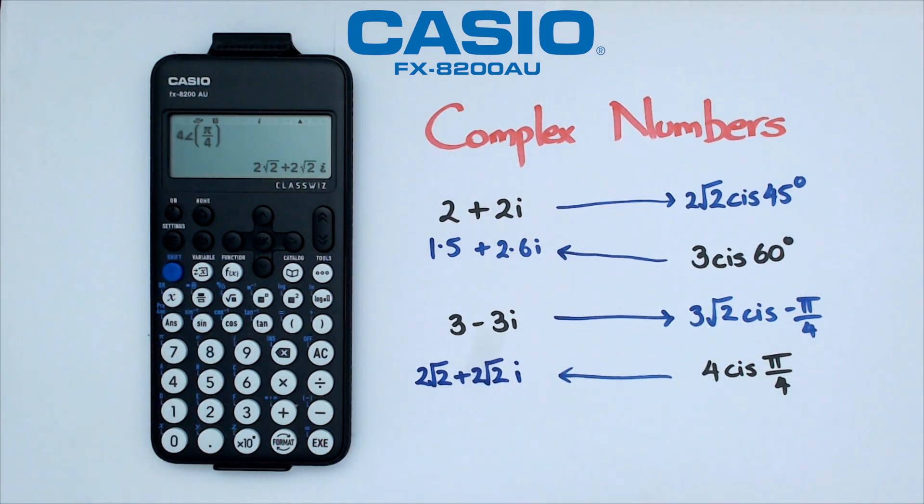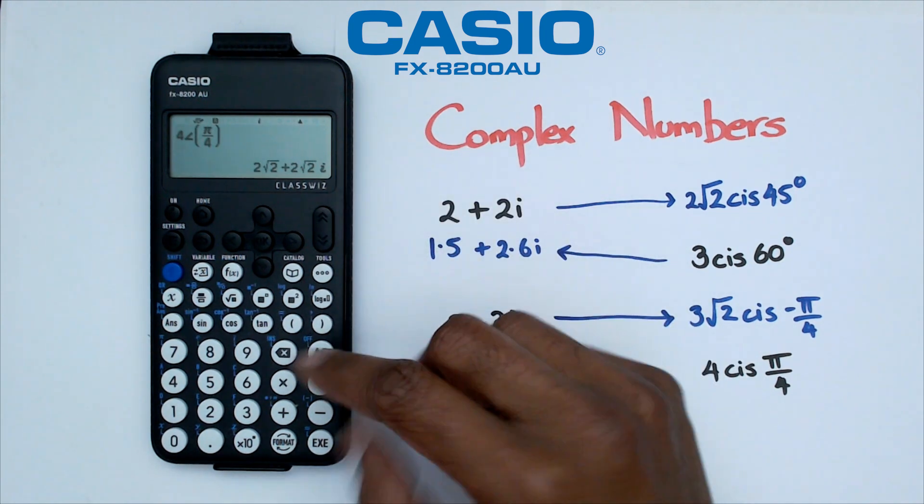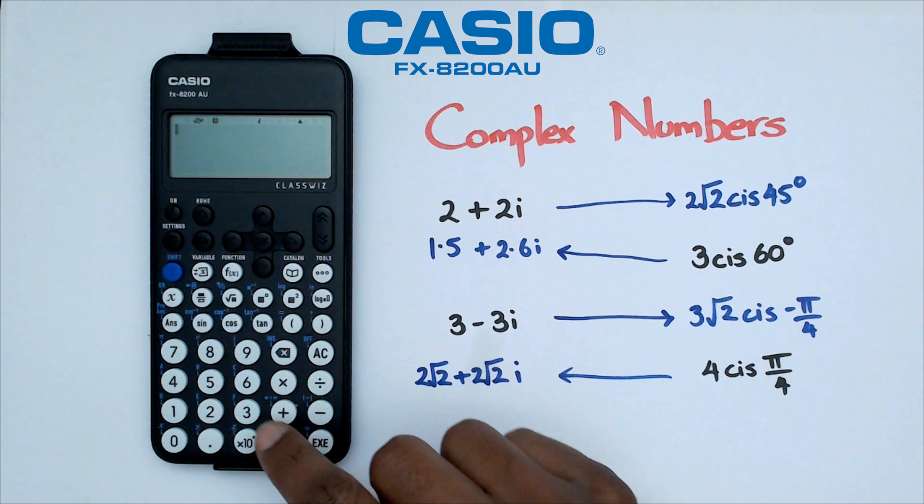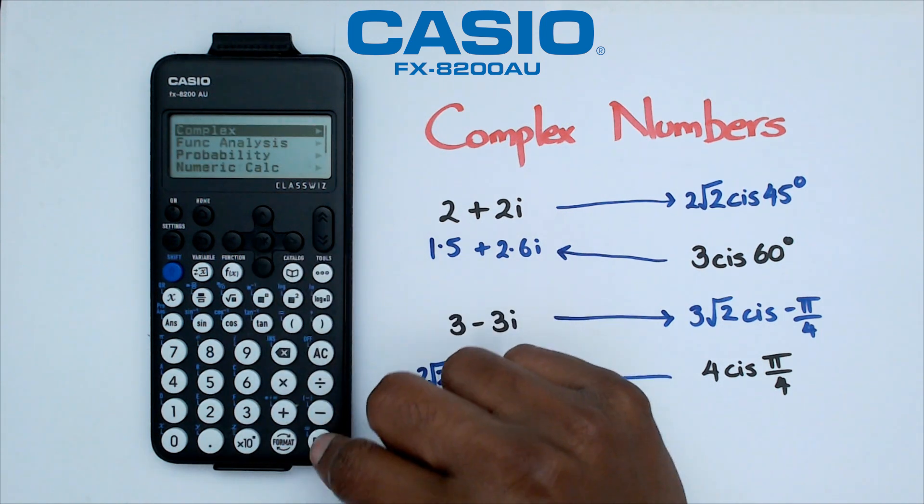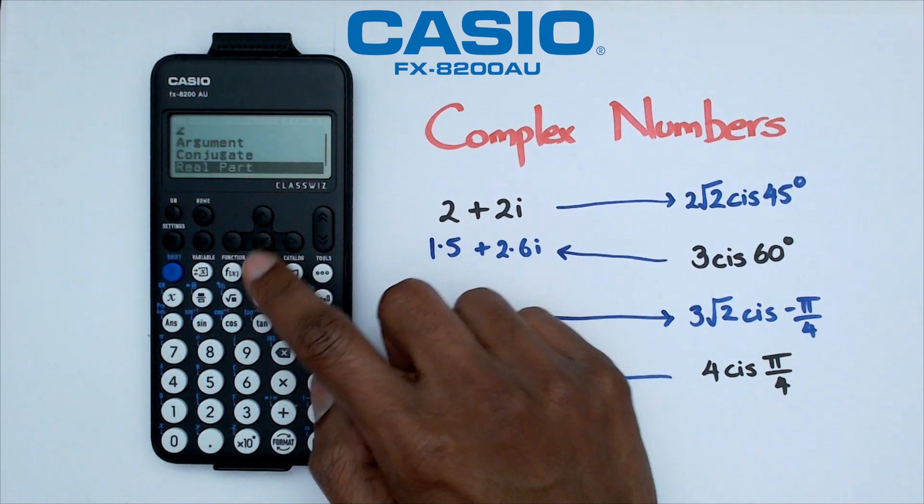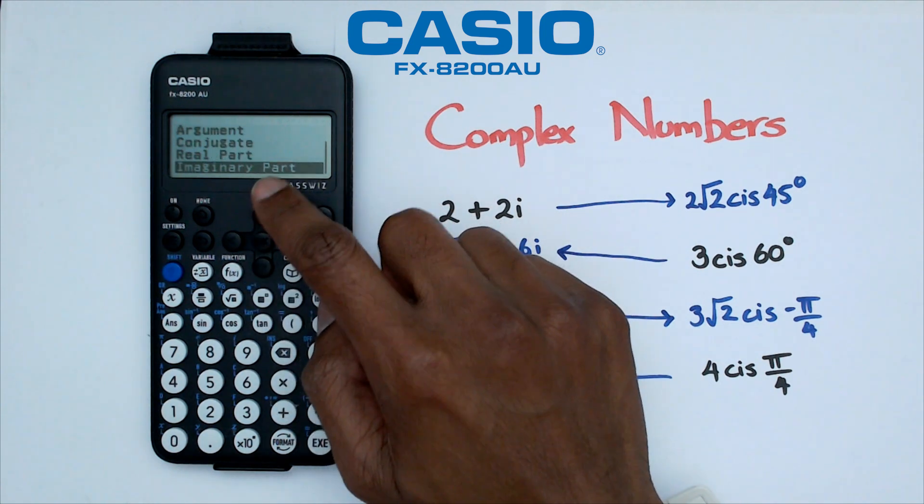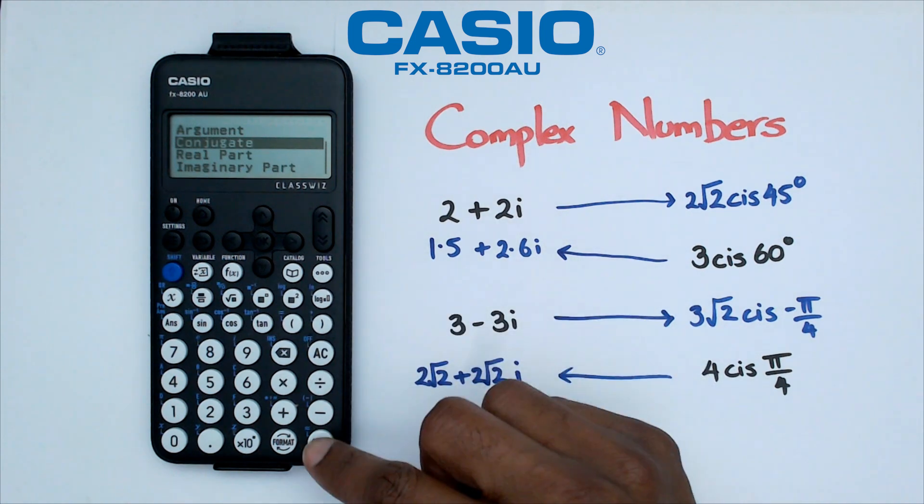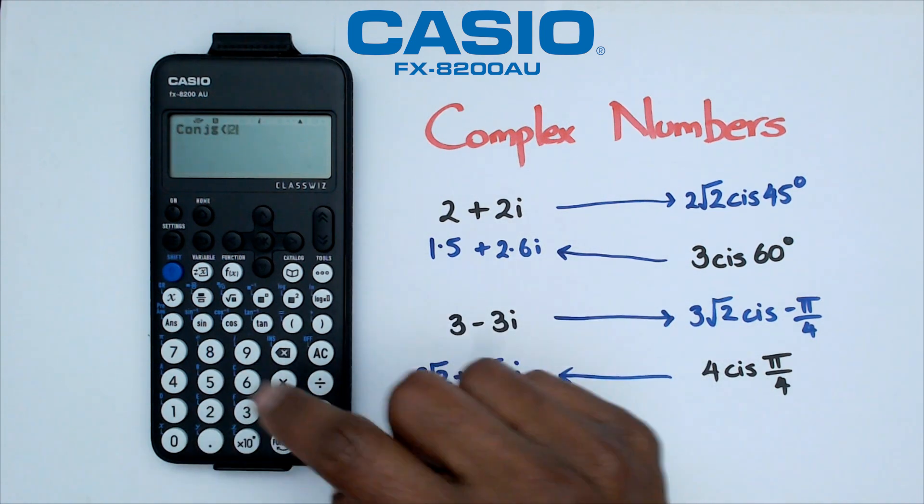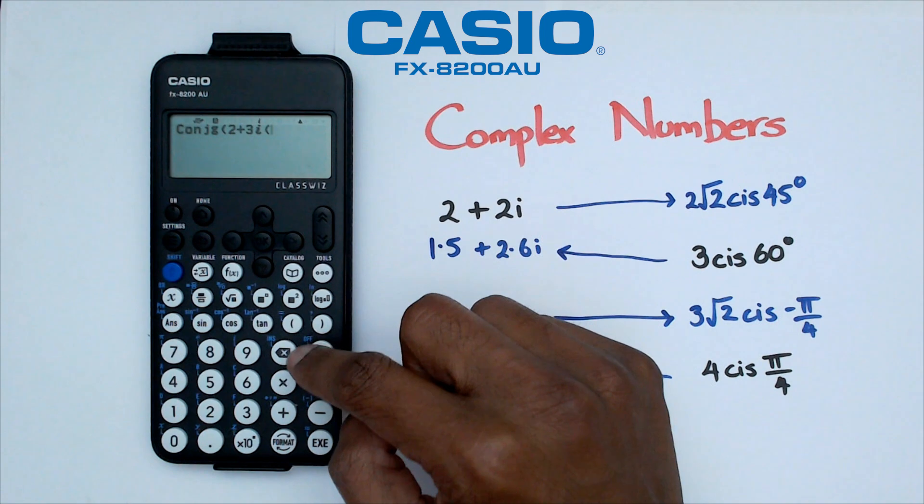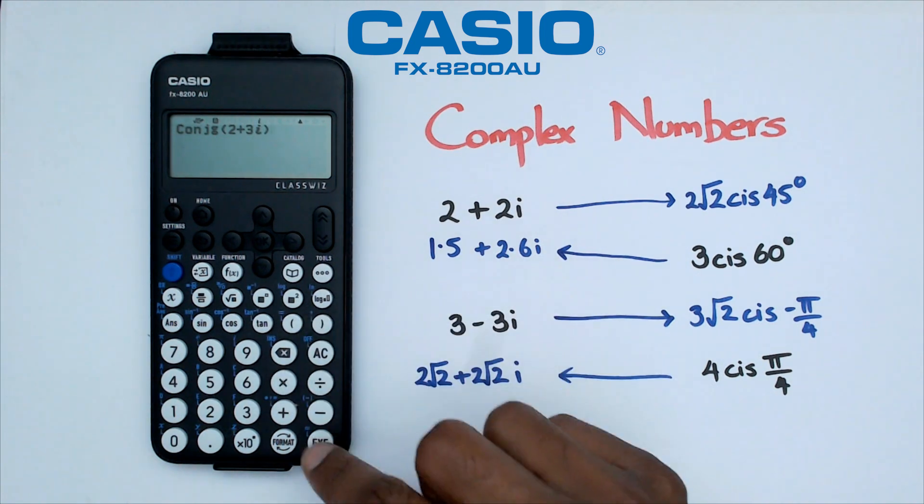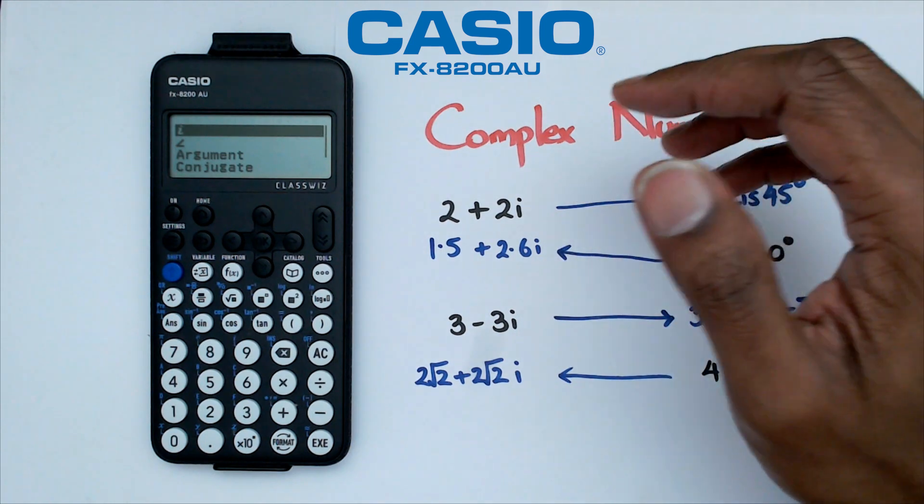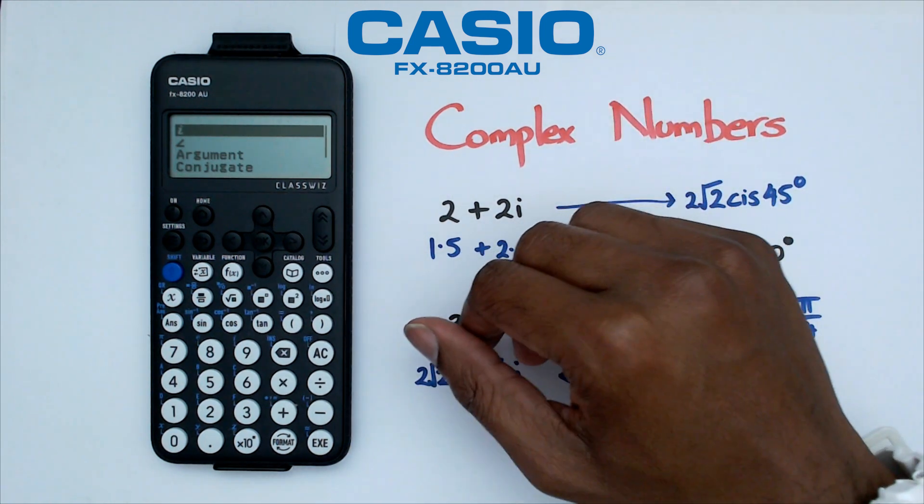Now there's a couple of other features that's actually worth noticing as well. But if you're confident with complex numbers, you don't really need to use this. But say, for example, you've got catalog, you can go to complex, you can actually get just the argument by itself, or just the real part and imaginary, and conjugate as well. Like, if you ever forget what the conjugate is, you can just go conjugate, and then you can go 2 plus 3i. The conjugate of that is 2 minus 3i, and that should pop up right there. And that's just a real quick summary of how to work with complex numbers on this particular Casio FX 8200 AU calculator.